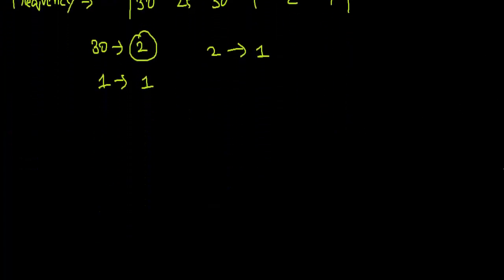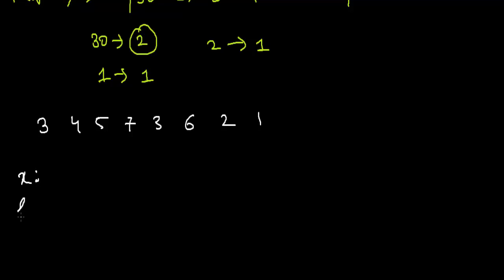Next we have simple frequency distribution. Some data are given like 3, 4, 5, 7, 3, 6, 2, 1 and we will arrange them in the order of frequency. So x is the values and f is the frequency. Starting from 1, 2, 3, 4, 5, 6, 7.